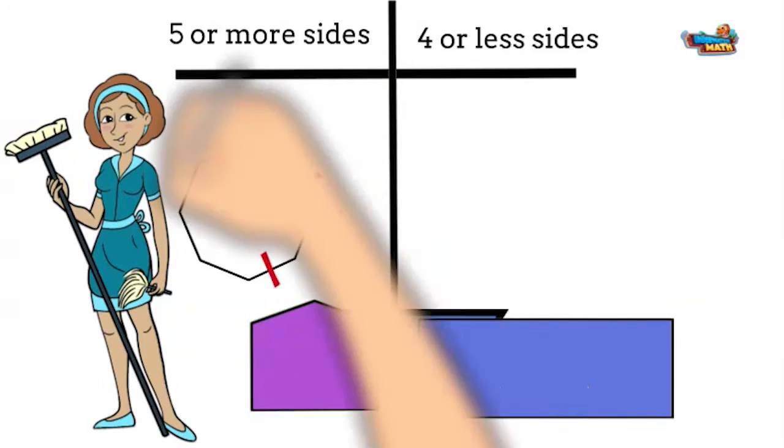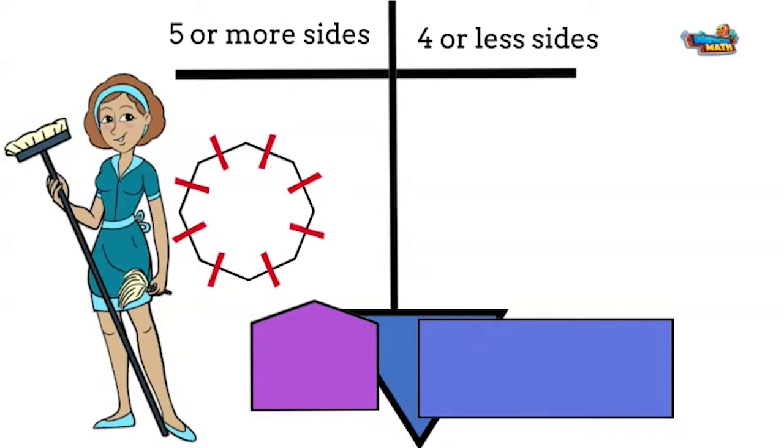There are one, two, three, four, five, six, seven, eight. It has eight sides and it is called an octagon. Does it have five or more sides? Yes it does. It will go here.